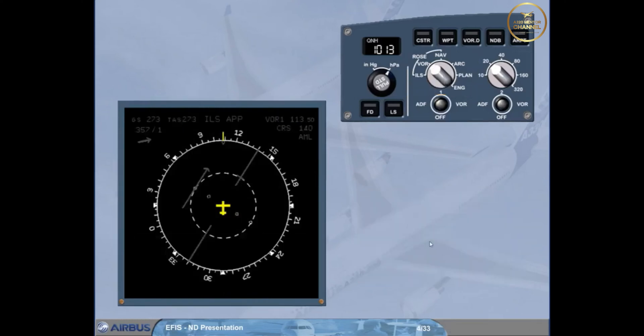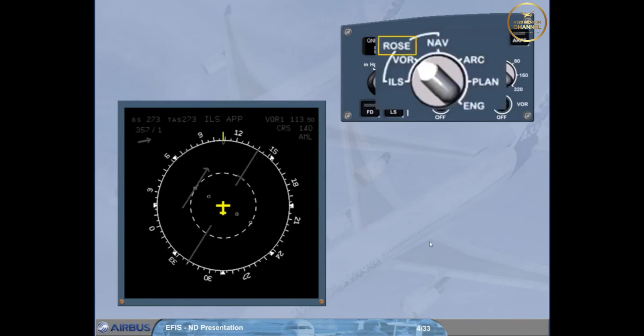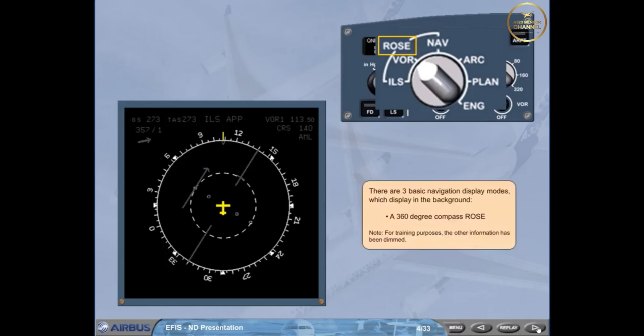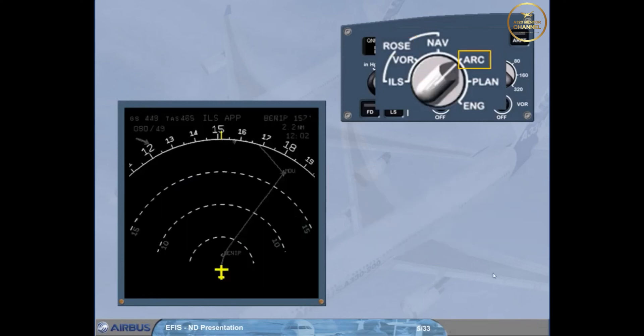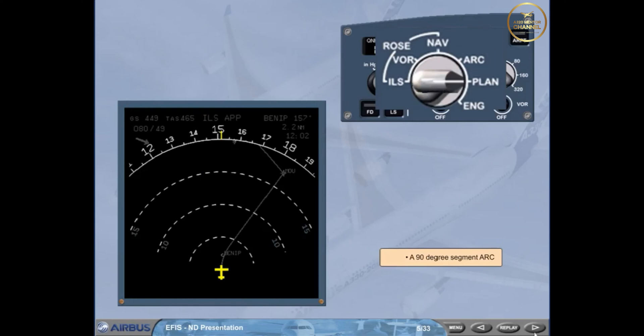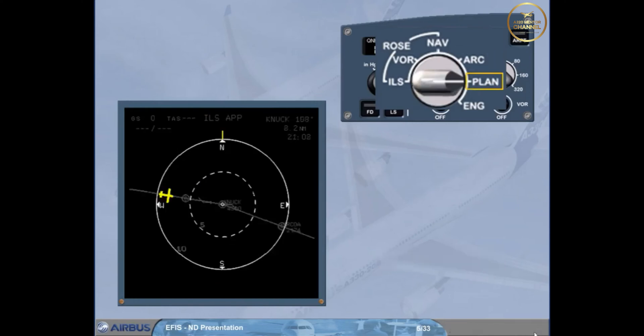There are three basic Navigation Display modes, which display in the background a 360-degree compass rose. Note, for training purposes, the other information has been dimmed. These include a 90-degree segment arc, and a map plan with the north at the top.